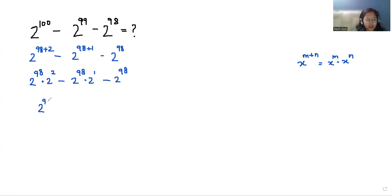Now I can take 2^98 as common. So what is left? 2^2 - 2^1 - 1. So 2^98 times (2 squared is 4 minus 2 minus 1) that gives us 1.